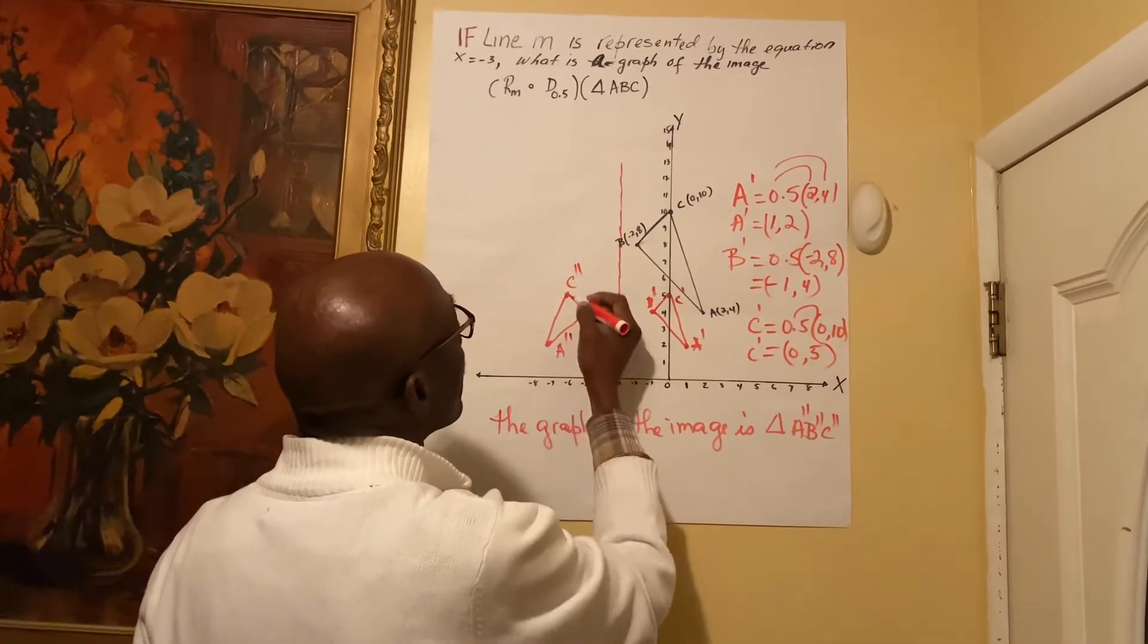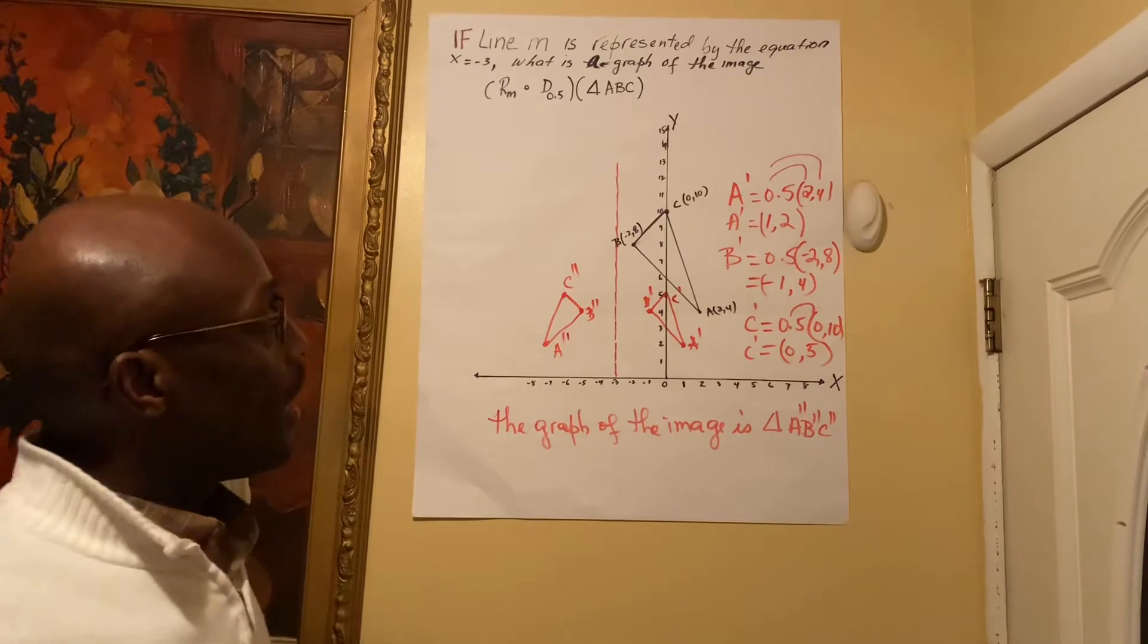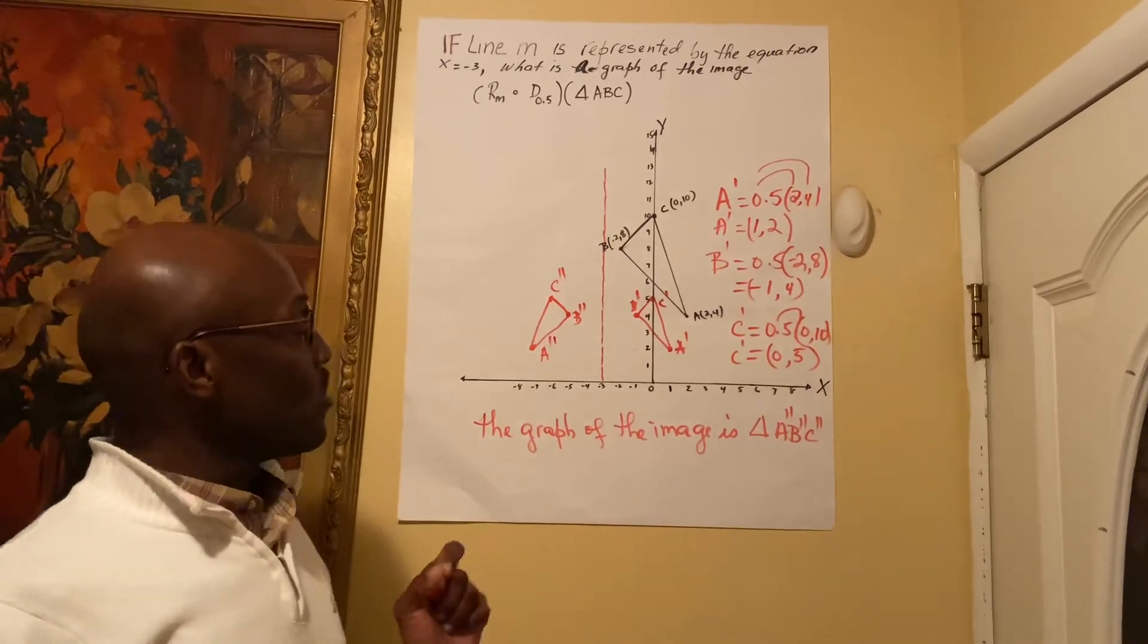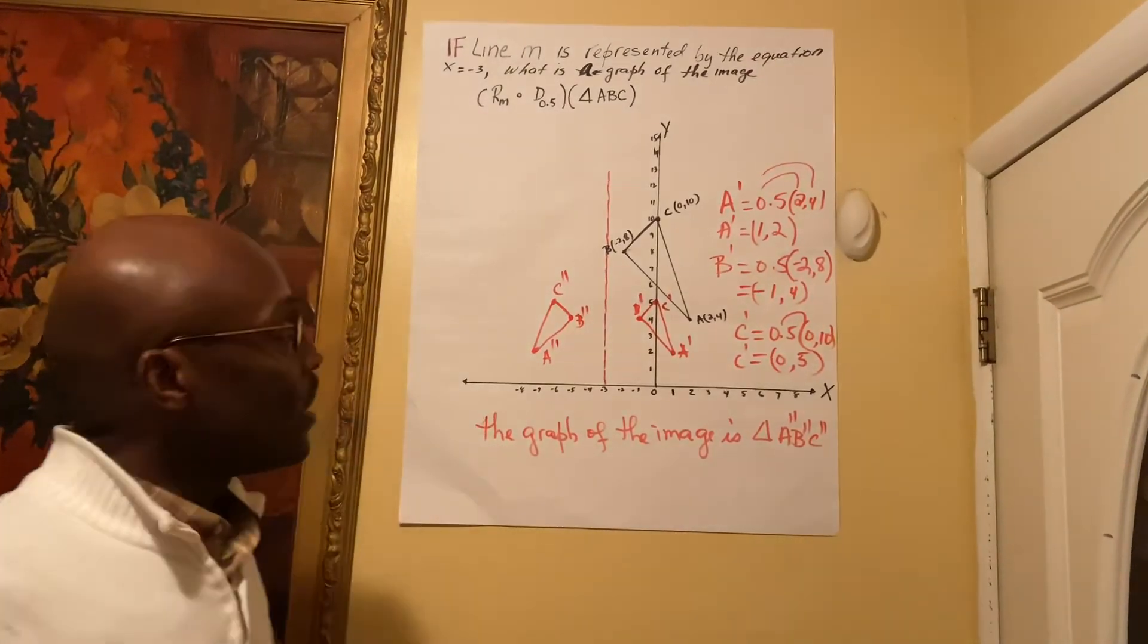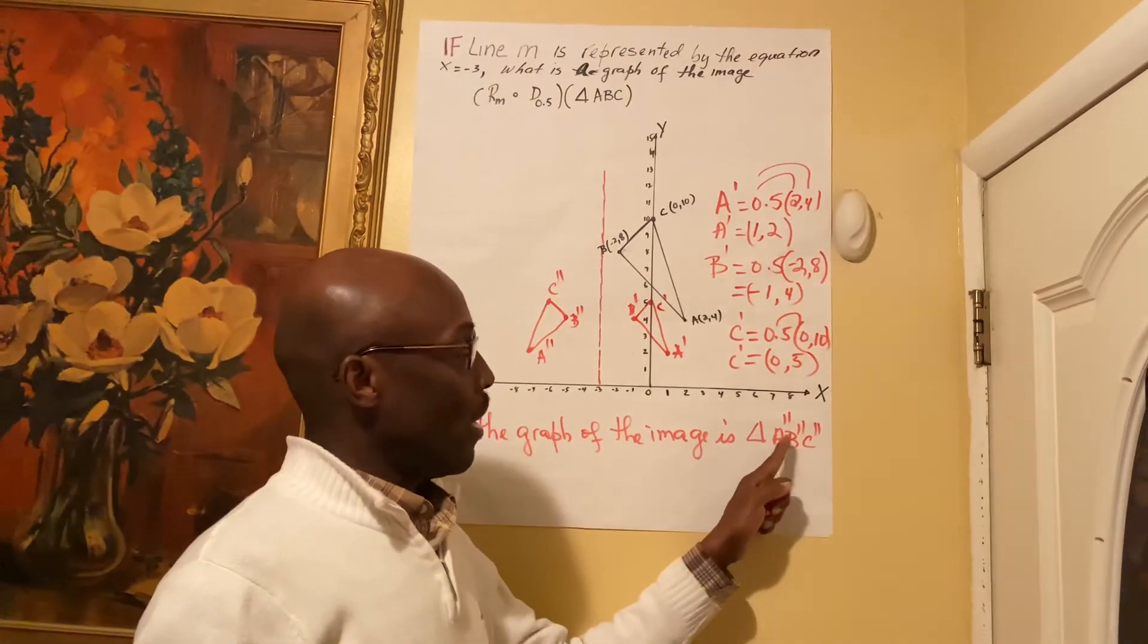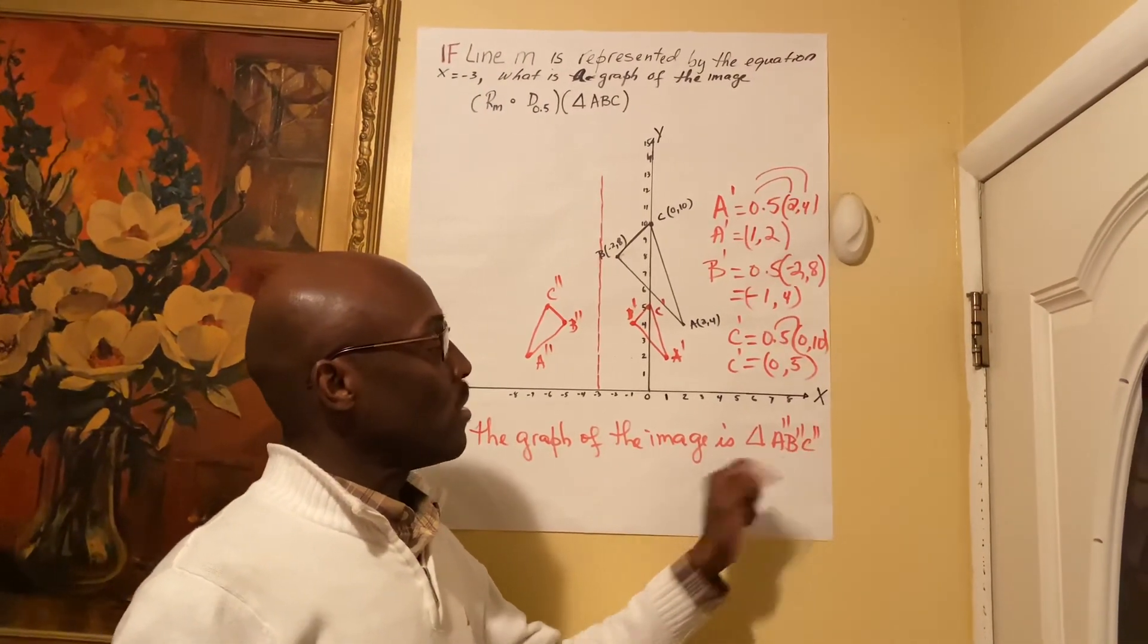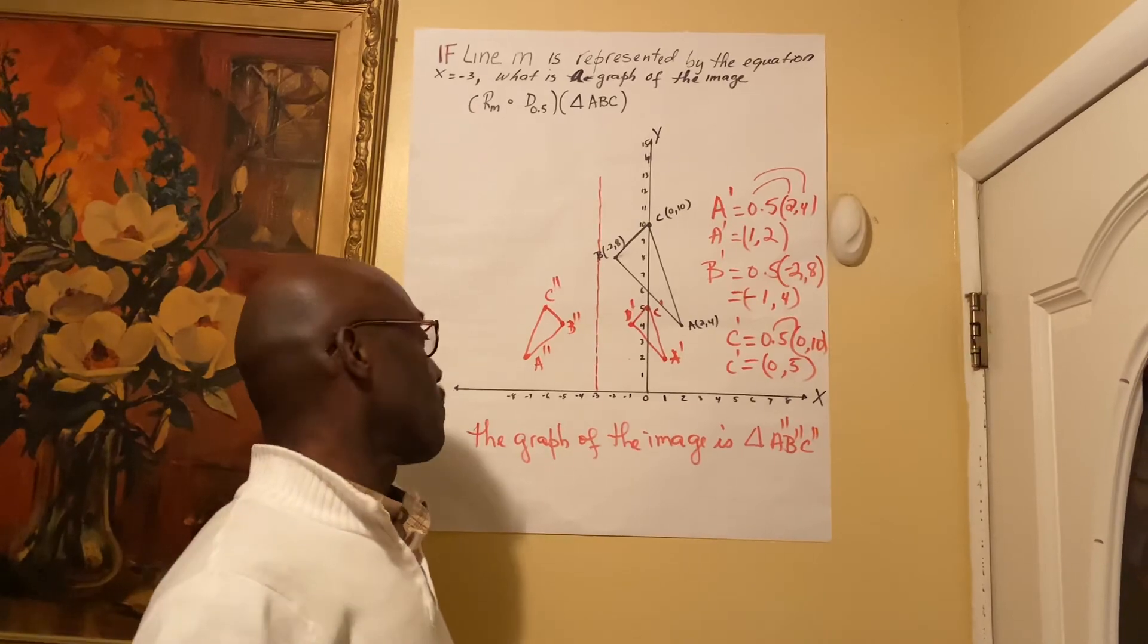And we connect the points. Now, the graph of the image is triangle A''B''C''. Thank you for watching.